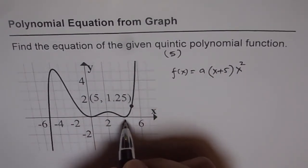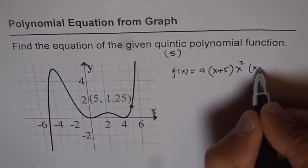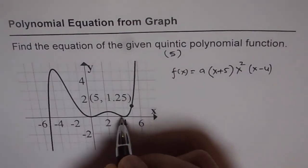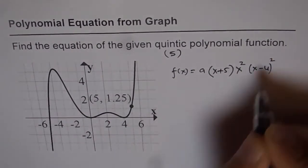Now the next one is at 4. So which could be written as x minus 4 and since it also bounces back it could be of order 2.